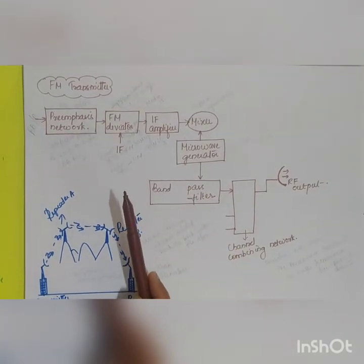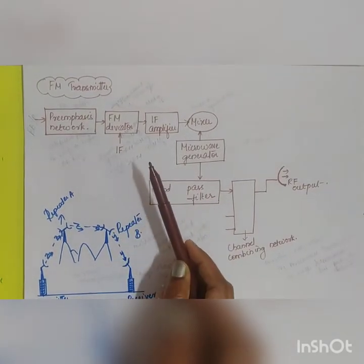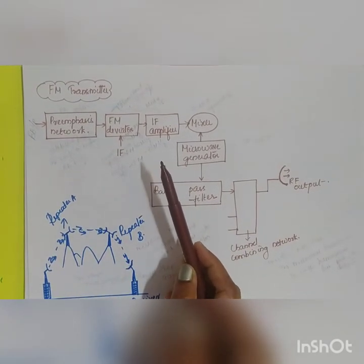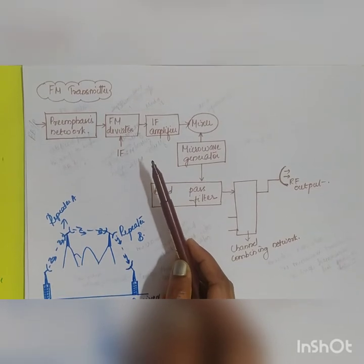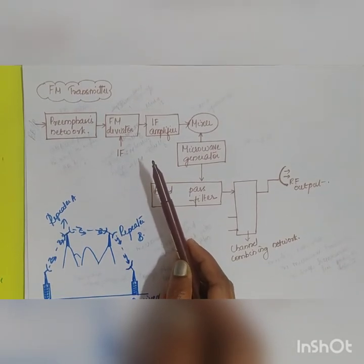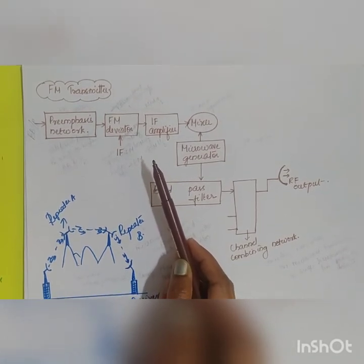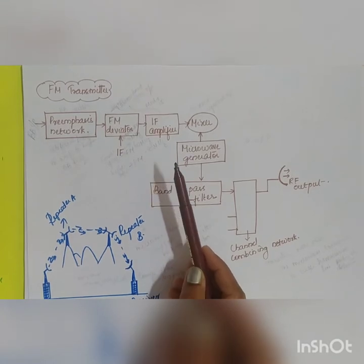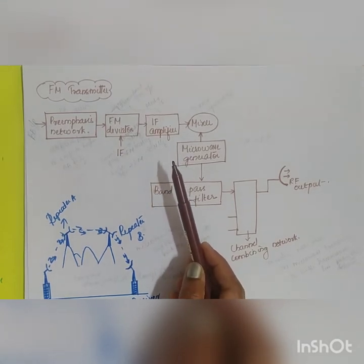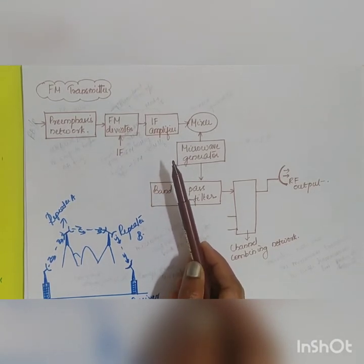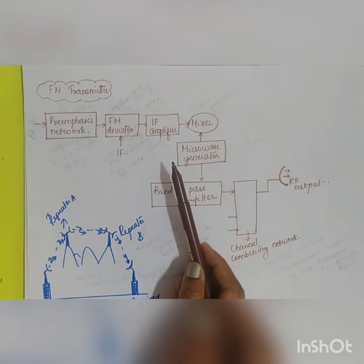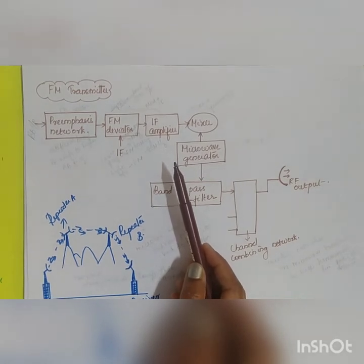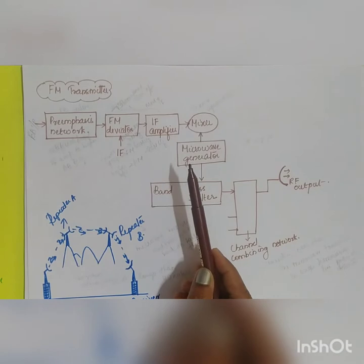The last topic in module 5 is the microwave communication system. Microwave communication deals with electromagnetic waves in the frequency range of 1 GHz to 30 GHz, where the overall microwave range spans from 300 MHz to 300 GHz.